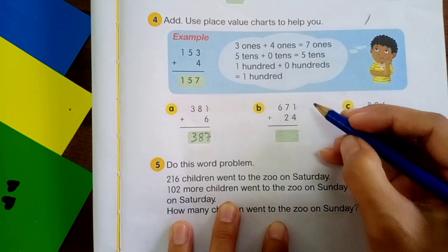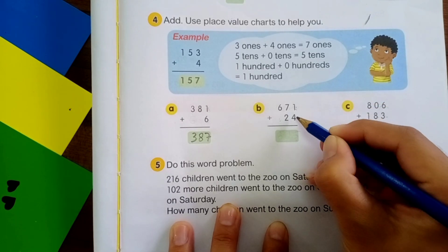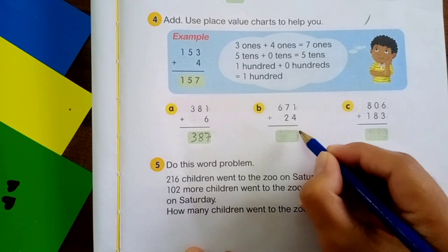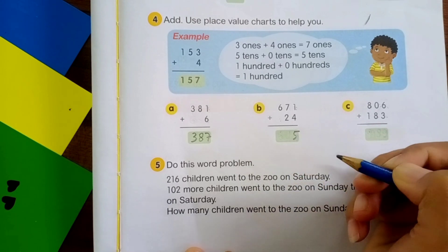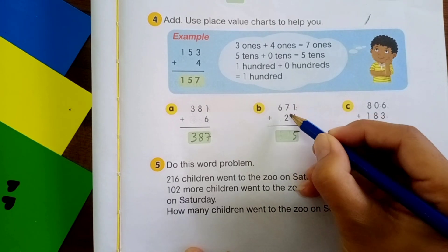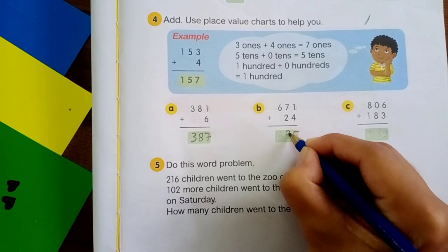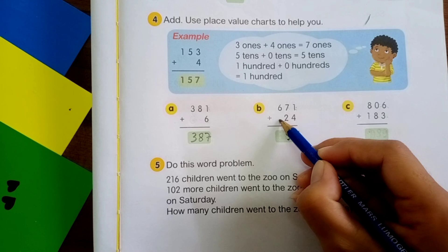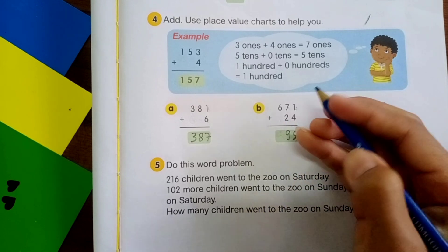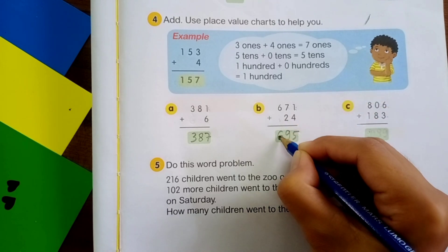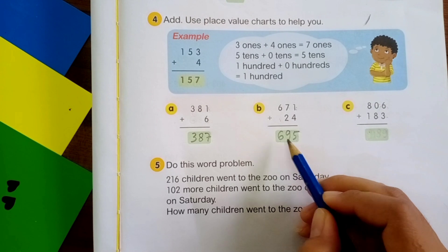Next, B. 1 plus 4 is equal to 5. 7 plus 2 is equal to 9. Good. And there is no hundreds. So we just write 6. The answer is 695.